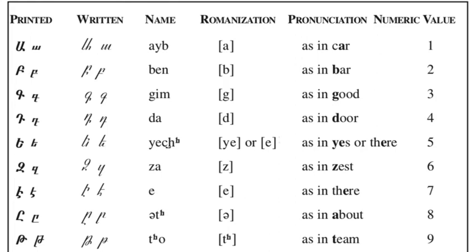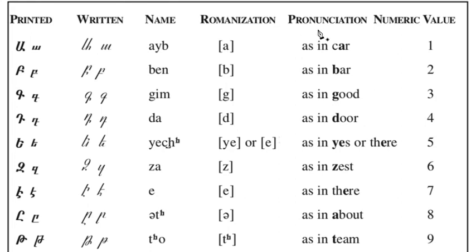Here we have the print version of the letter, uppercase and lowercase, the handwritten form, the name of the letter, transliterated or romanized (and there are different versions), the sound, the pronunciation example, and the numeric value.